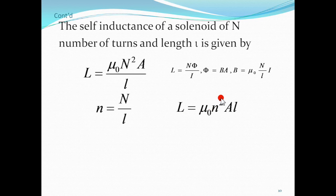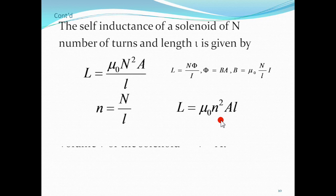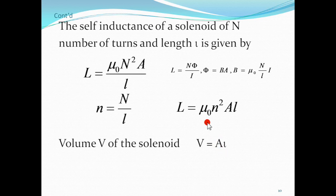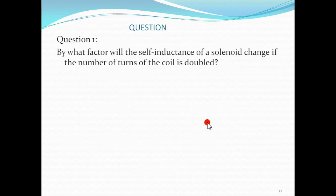L equals mu-naught times n-squared times A times l, where n is the number of turns per unit length. Substituting, n-squared times l-squared gives n-squared, and A times l is the volume of the solenoid — the base area times the length. Therefore, self-inductance can be expressed as L equals mu-naught times n-squared times the volume V of the solenoid.